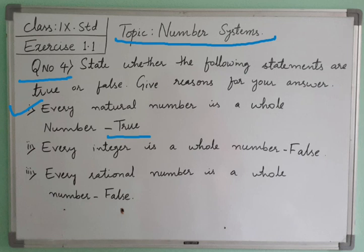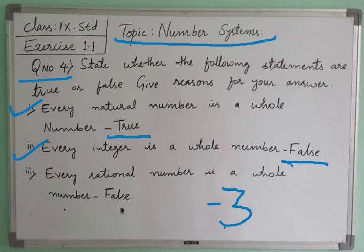The second question: every integer is a whole number. It cannot be — it is false. Because whole numbers are nothing but only the positive numbers along with 0. But when we say integers, it includes negative values also. So if we consider the number minus 3, it is an integer but it is not a whole number. That is why this second statement becomes false.